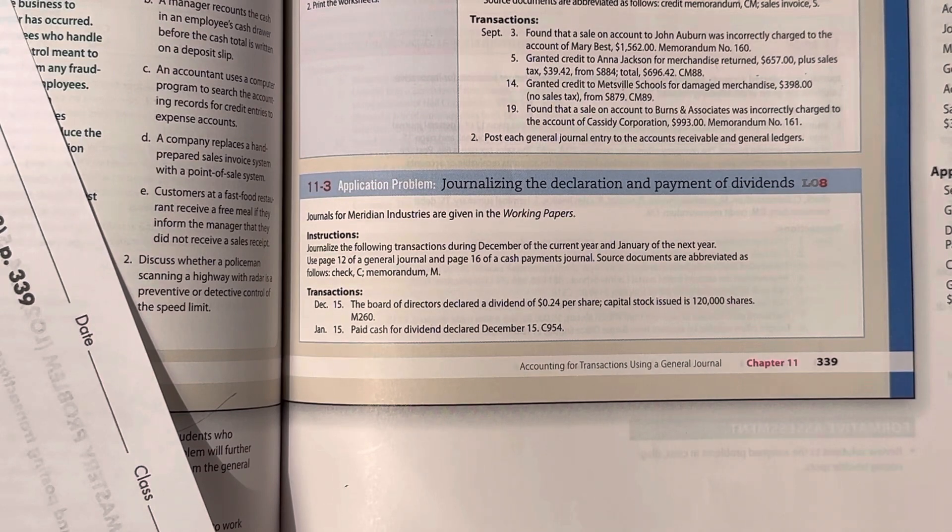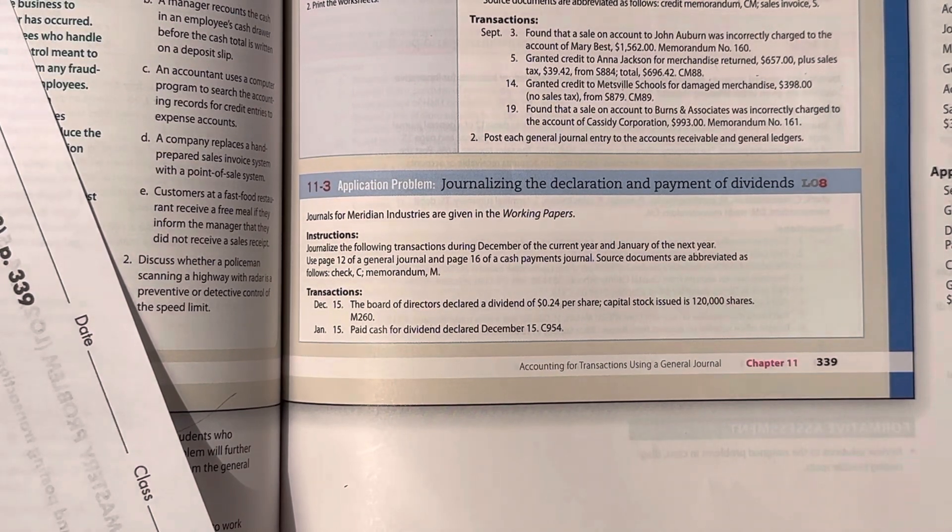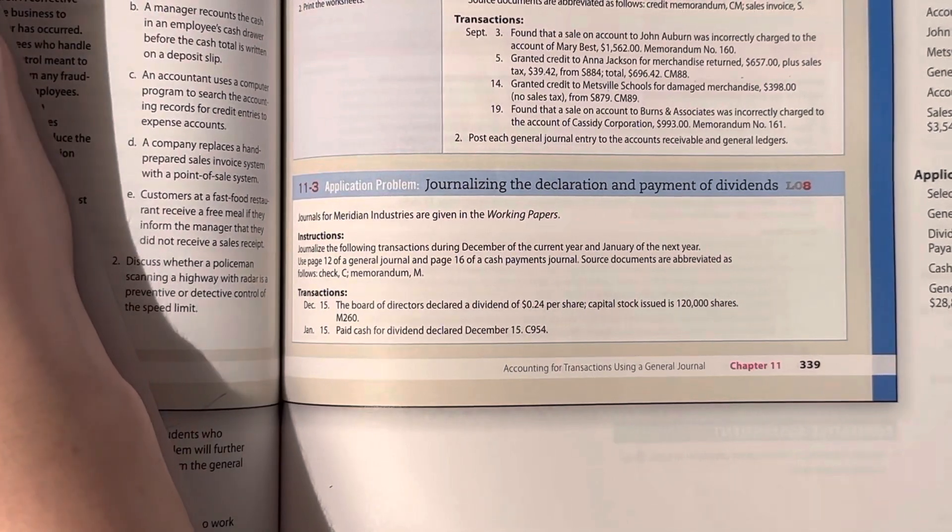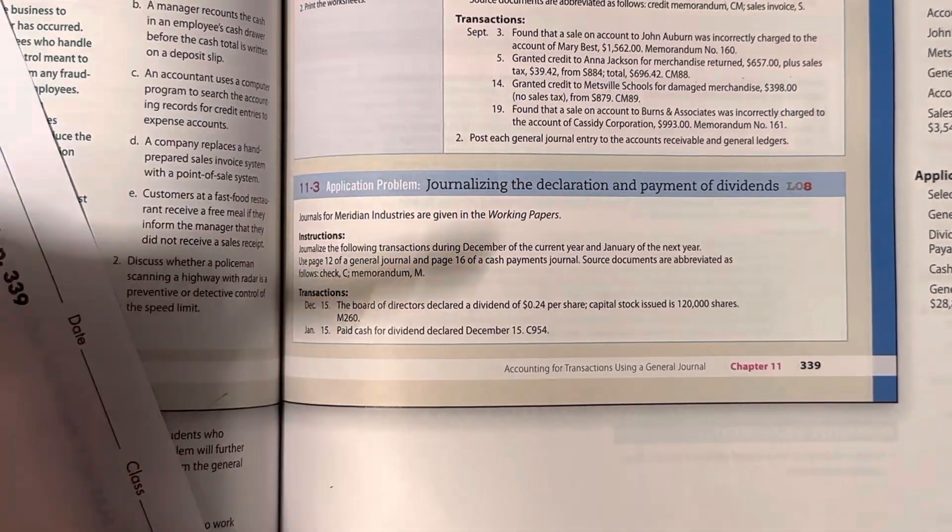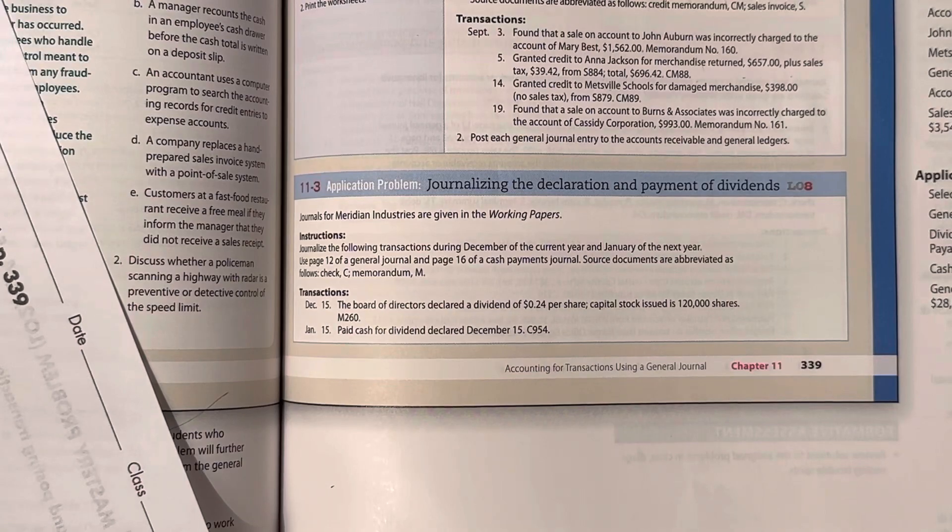In January of the next year, use page 12 of the general journal and page 16 of the cash payments journal. So that was the first thing I did, was write 12 and 16 on my journals.